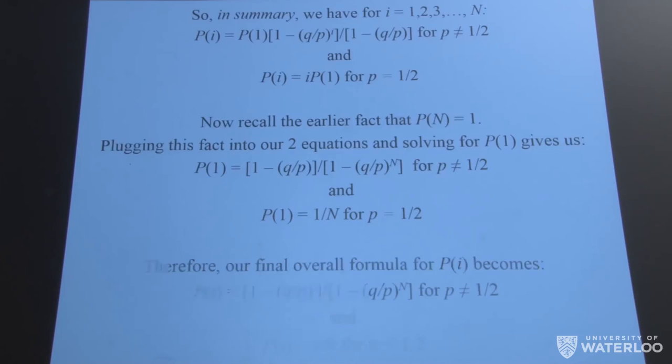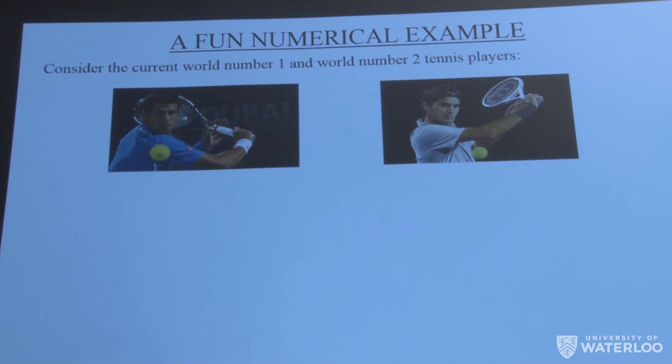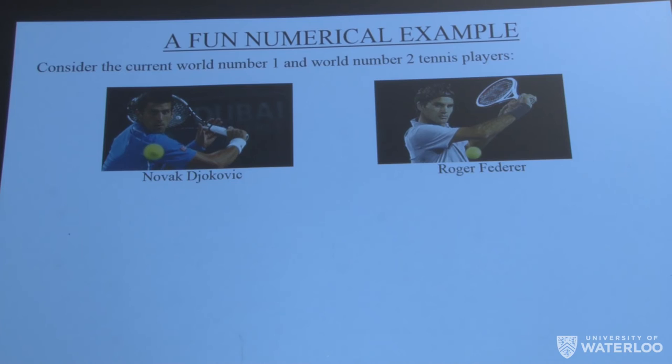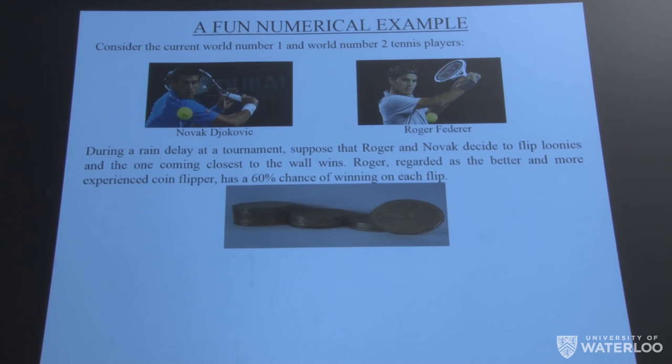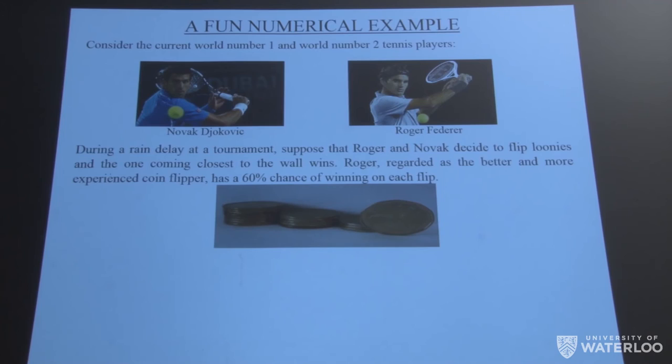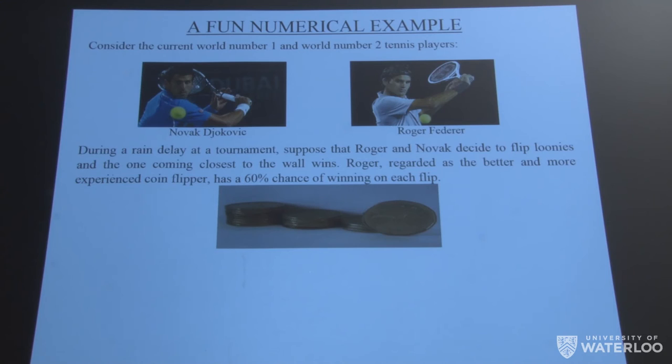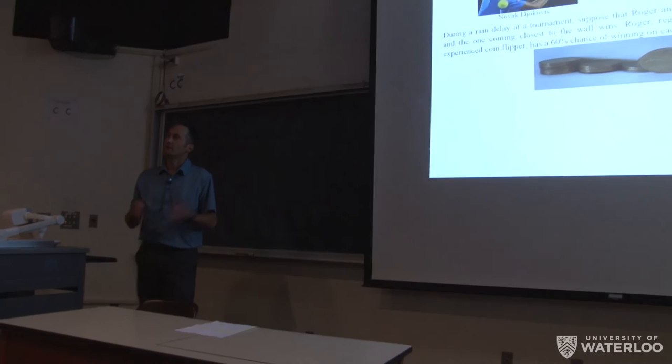So at this point, to recap, now to sort of summarize, let me give you a fun numerical example just to demonstrate the use of this. And I thought I would use the following scenario. Let's consider the current world's men's number one and men's number two tennis players in the world. So these are the two guys here. I'm sure you guys are familiar with this if you're tennis fans. This is Novak Djokovic, the number one player, and Roger Federer on the right. These guys travel the world. They play many, many tournaments. And so let's create a scenario here where they're not able to go on the court. So what they're going to do is they're going to be, instead of playing ping pong in the locker room, they decide to have this other game. They're going to play closest to the wall. They're going to flip coins. Let's suppose they're in Canada for a tournament. They're going to flip loonies. They're going to stand a certain distance from the wall. They're going to flip and they're going to measure the distance to the wall. And whoever's closest wins.